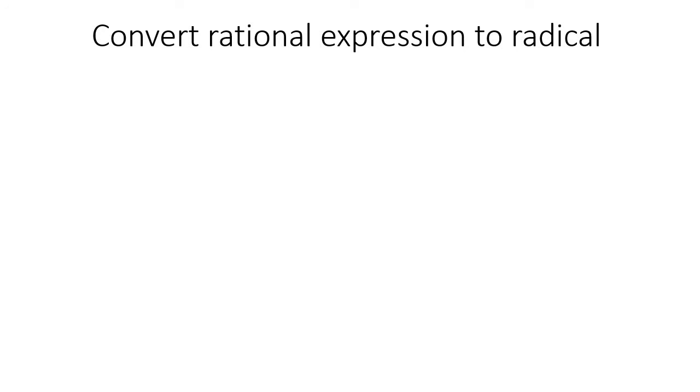In this lesson, we're going to learn how to convert a rational expression, which is something like r to the 3 over 2, and rewrite that as a radical, which is something that has a root. Either a cube root, a fourth root, a fifth root, or even just a normal square root, where I don't put anything there, then it's a square root, where there's a 2 over there.